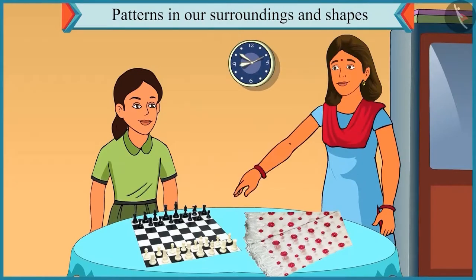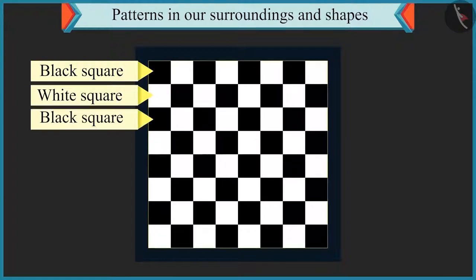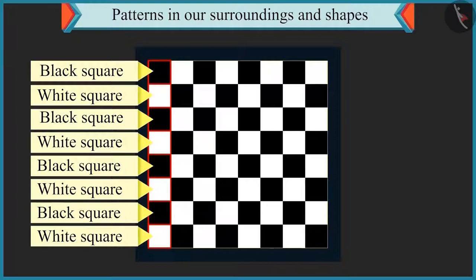Chutki, now look at this. A pattern of one black square and then one white square followed by a black square is repeated in a chess board. Oh yes. You are right.